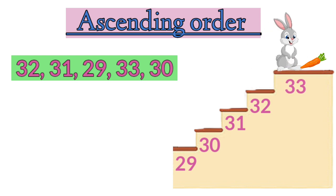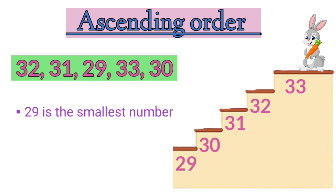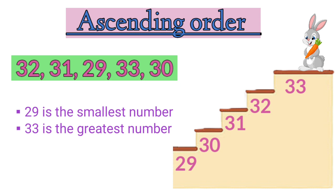Children, finally with your help Mr. Bunny caught his yummy carrot! Among these numbers, which is the smallest number? Yes, number 29 is the smallest number. And which is the greatest number? Very good, number 33 is the greatest number. Remember that in ascending order we should always start with the smallest number and end with the greatest number. Now, descending order means arranging numbers from big to small.